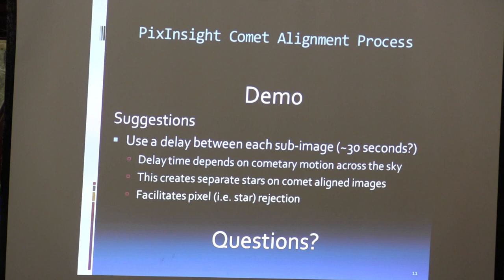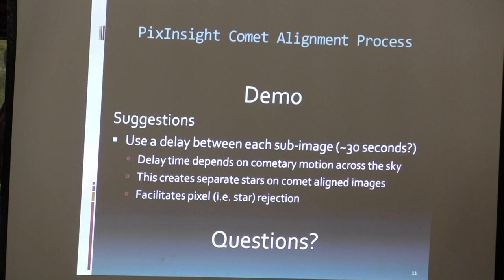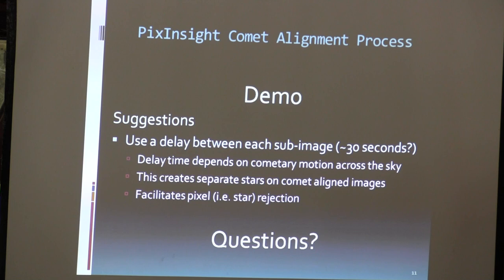I'm about to start the demonstration, but one suggestion I want to make goes back to when you're shooting your subs. You want to make sure that the comet is in a significantly different position in each sub, so that when you align on the comet, the stars are unique and distinct and not overlapping.